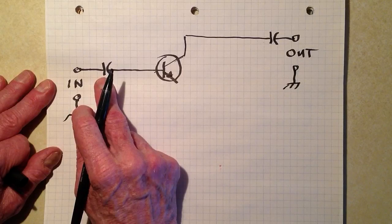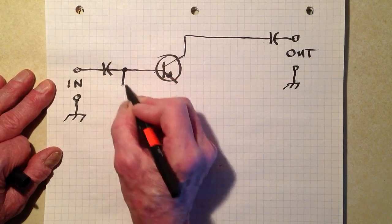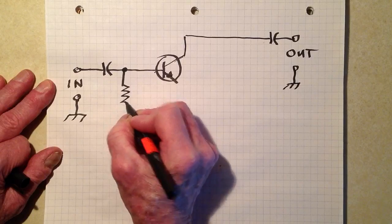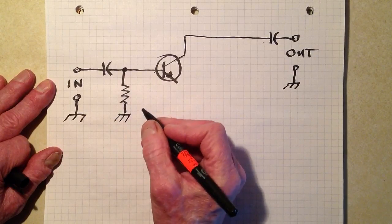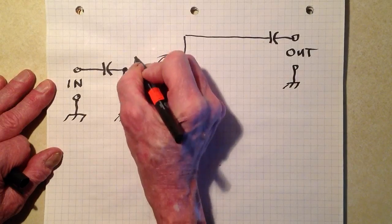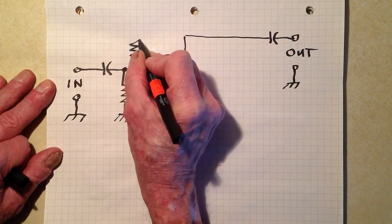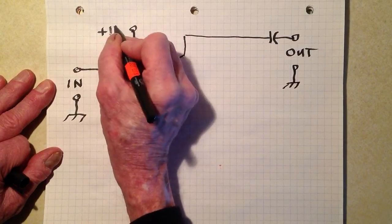So there's our input capacitor. We put a resistor between the base and ground, and another resistor between the base and the positive power supply.